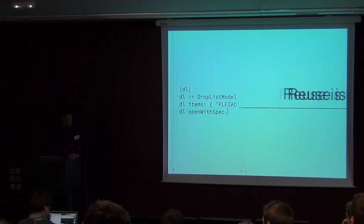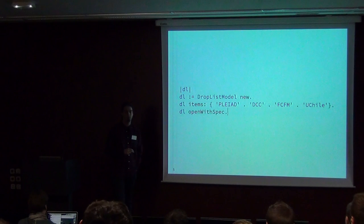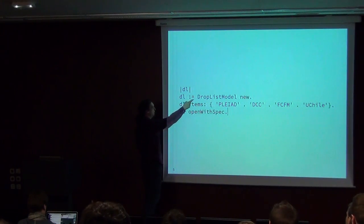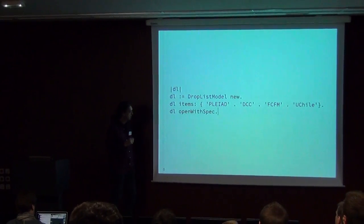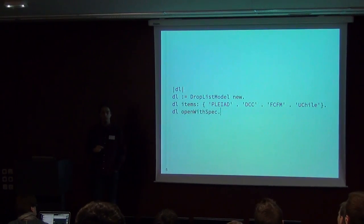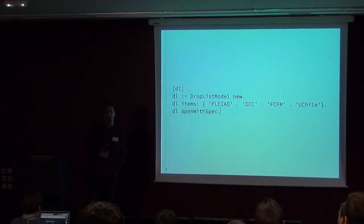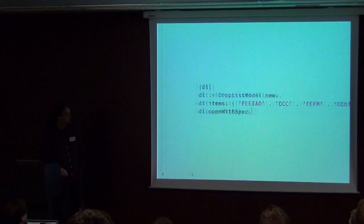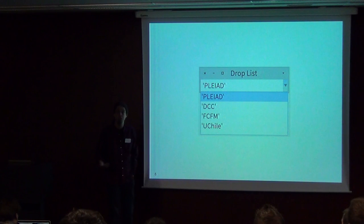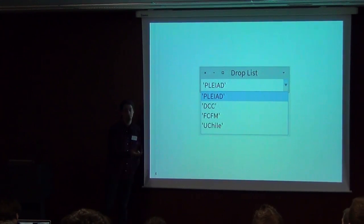How is this done? Every widget that you have in your user interface is already a complete user interface, and every user interface that you make can be reused as a widget. Let's make a stupid example: a drop list. You click on this and the list opens. This is how you instantiate one in Spec. This is how you can set the items — this is my full affiliation. And then you have the widget. But actually, this widget is a full user interface. If I send it open with spec, I have a window with a full user interface. Every widget — send it open with spec — gives a complete user interface.